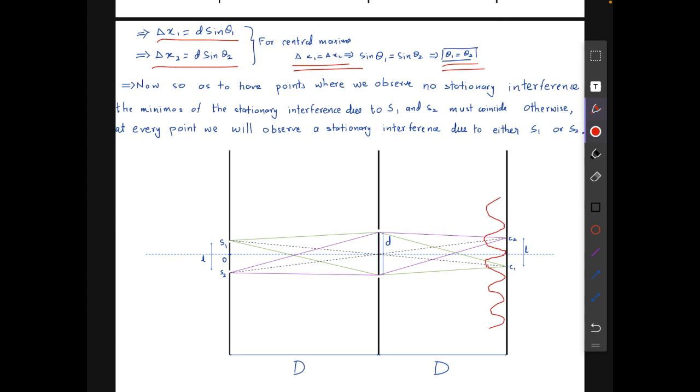And the interference pattern due to S2 is something like this. If the minimas don't coincide, at every point there will be some stationary interference either due to S1 or S2 and it won't have zero value. So the minimas due to both of these should coincide.